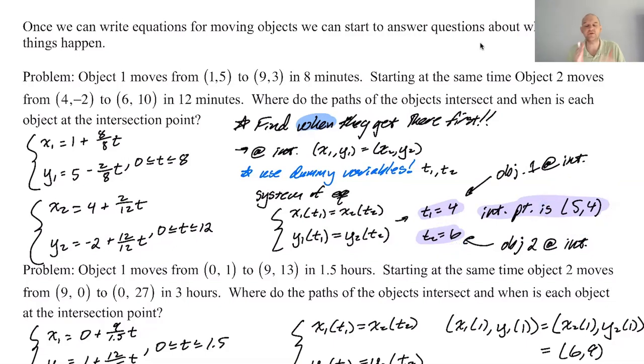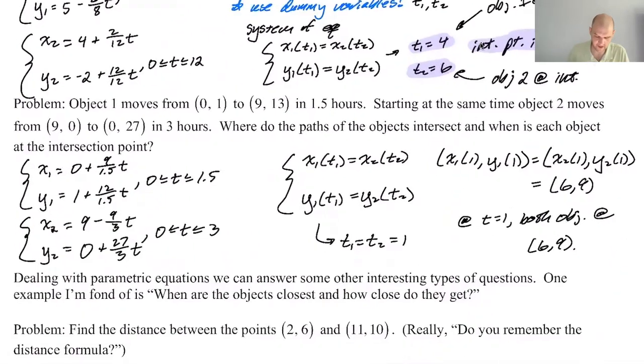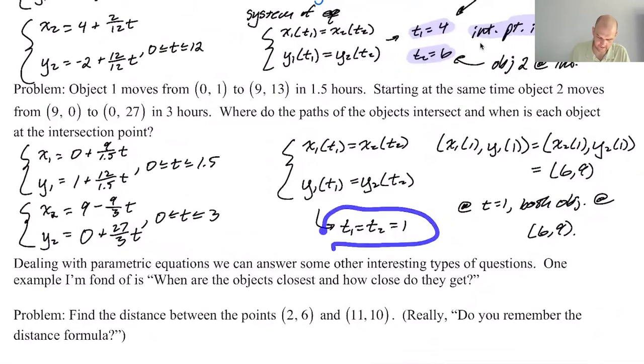In the second problem they crashed—both got to the intersection point at 1 second. The intersection point was at (6, 9). If they crash, the minimum distance is zero.